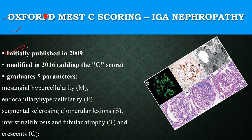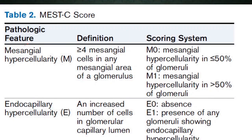There are four parameters taken into consideration: M is mesangial hypercellularity, E is endocapillary hypercellularity, S is segmental sclerosis, T is IFTA — interstitial fibrosis and tubular atrophy — and C is the presence of crescents. We will go into the scoring of each.